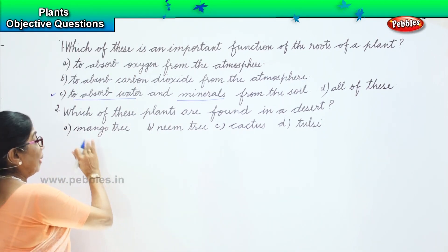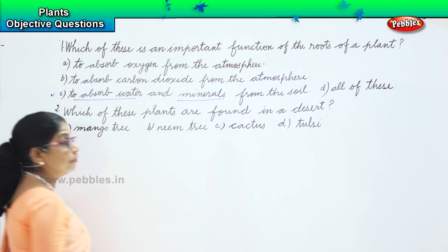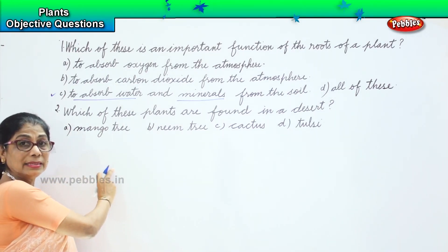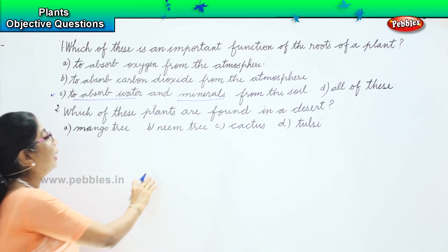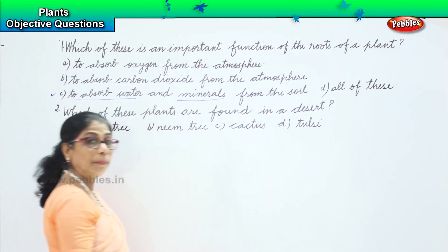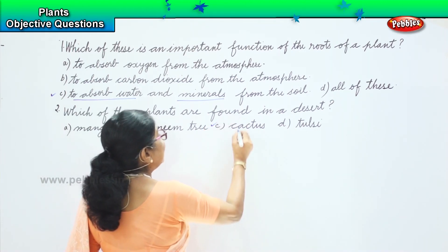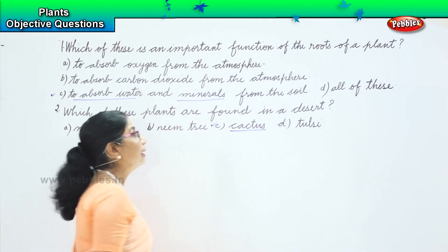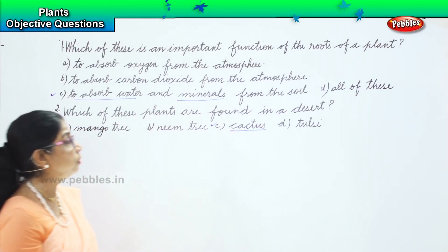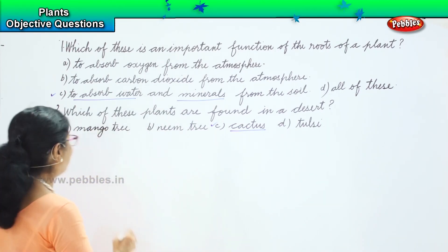Which of these plants — mango, neem, cactus, or tulsi — are found in a desert? Is a mango tree found in a desert? No. Is tulsi, a medicinal plant, found in a desert? No. It is option C — cactus. Cactus is a plant that is normally found in a desert.